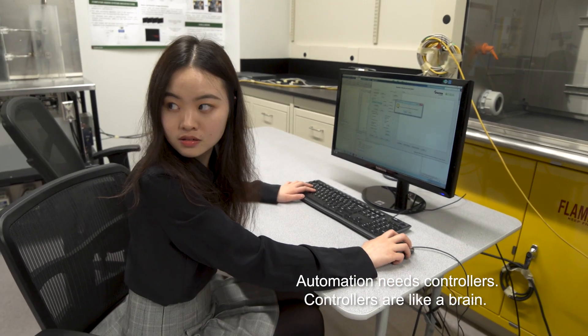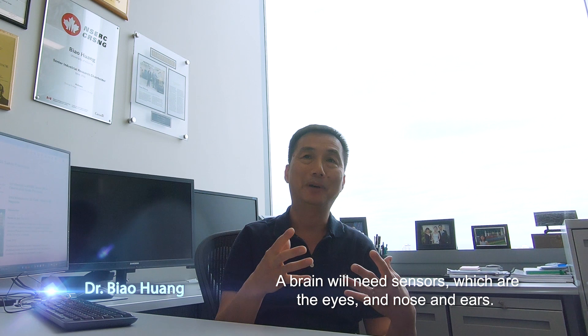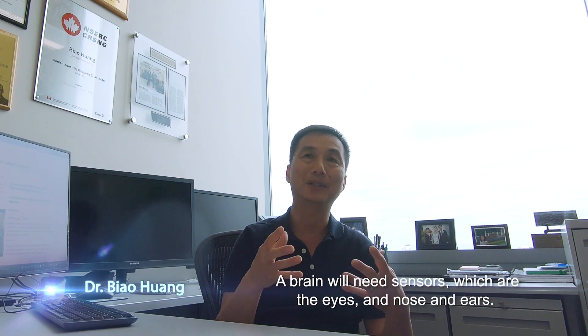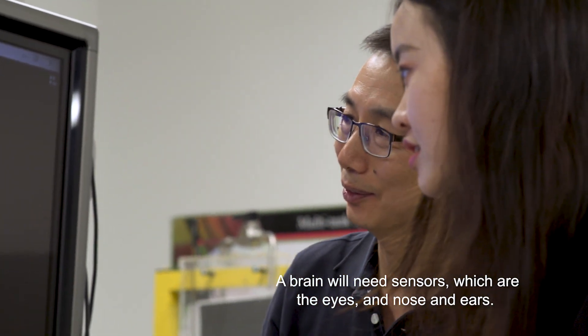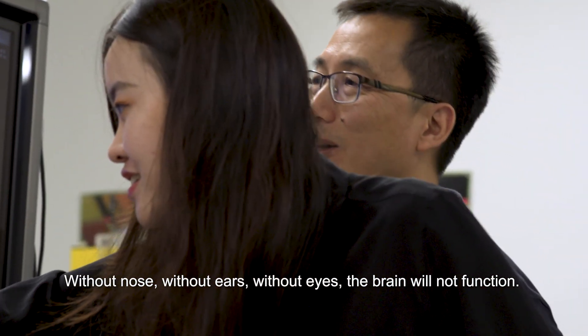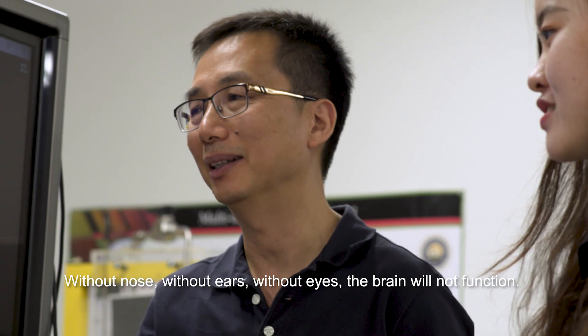Automation needs a controller. A controller is like a brain, but the brain needs sensors, which are the eyes and the nose and the ears. Without nose, without ears, without eyes, the brain will not function.